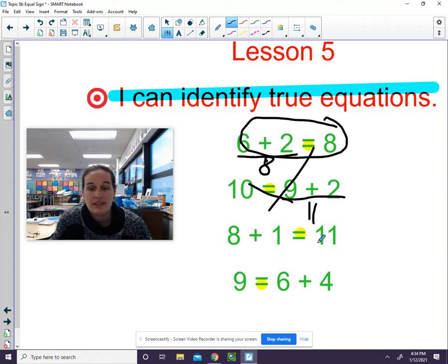Eight plus one equals eleven. I'm going to find the addition part first. Here it is. What's eight plus one? Nine. And now I'll go nine equals eleven. That's false. Let's put a big X in it.